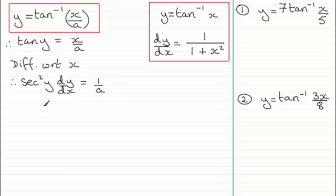And now we divide both sides by sec squared y and we end up with dy by dx equaling 1 divided by a times sec squared y. And here we have a function of y and we need to express it in terms of x.